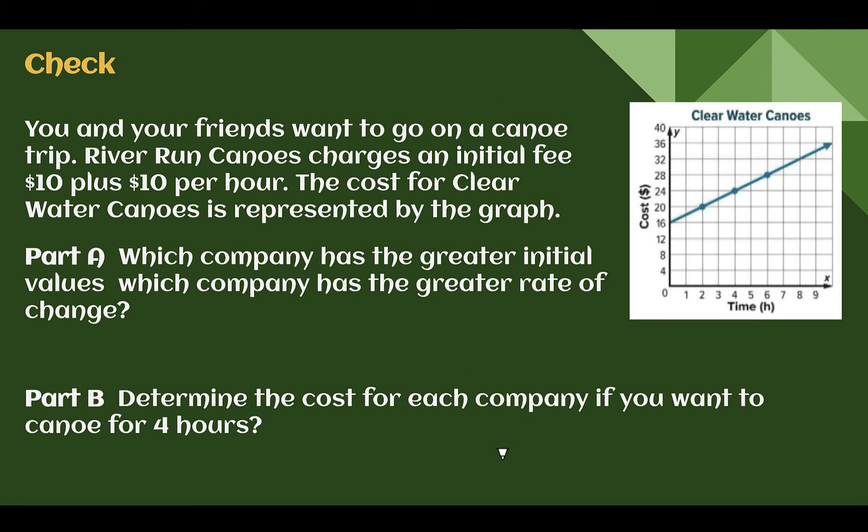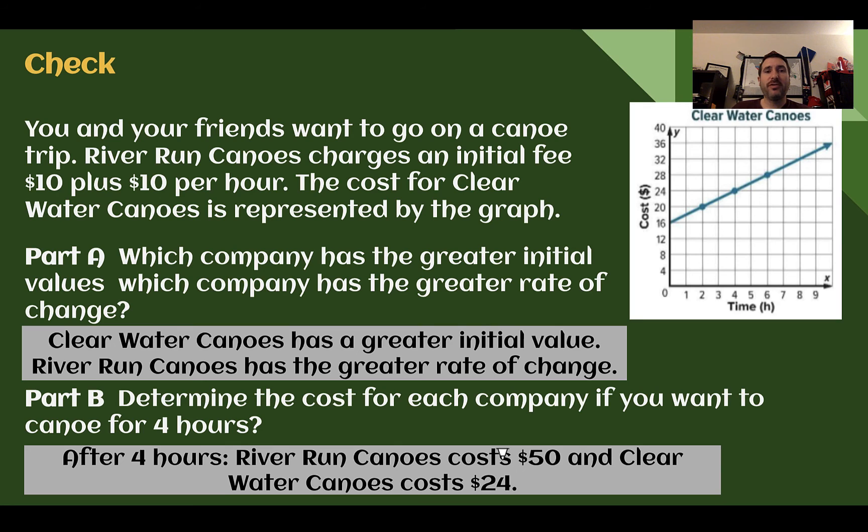Check your understanding, read through the situation, and answer both parts. Pause the video now and complete this check. Check your answer. First, which company has the greater initial value? That would be Clearwater Canoes. Riverrun is $10 for the initial fee. On our graph, Clearwater Canoes has an initial fee of $16.00.